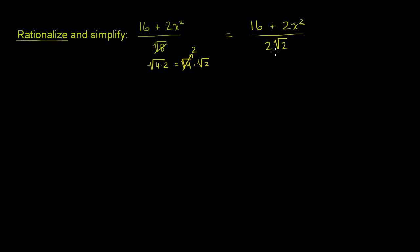I've simplified a little bit, but done no rationalizing just yet. It looks like there's a bit more simplification I can do first, because everything in the numerator and denominator is divisible by 2. So let's multiply the numerator and the denominator by one half. So 16 times one half is 8, 2x squared times one half is just x squared, and 2 times the principal square root of 2 times one half is just the square root of 2. This whole thing has simplified to 8 plus x squared over the square root of 2.